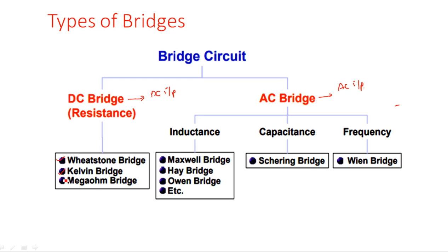For resistance measurement using DC bridges, there are three types: Wheatstone's bridge, Kelvin's bridge, and Mega ohm bridge. Wheatstone's bridge measures resistance in kilo-ohms; Kelvin's bridge can measure very low resistance even in ohms; and the Mega ohm bridge measures resistance in mega-ohms. Kelvin's bridge further has two subtypes: the normal Kelvin bridge and the Kelvin double bridge.